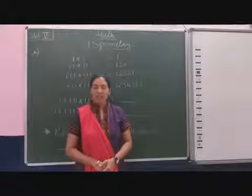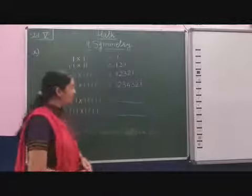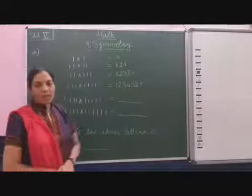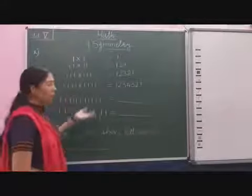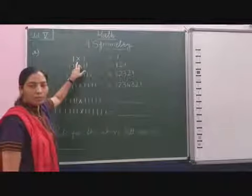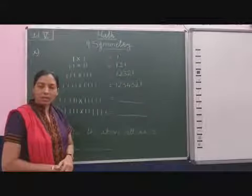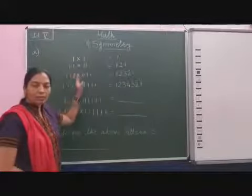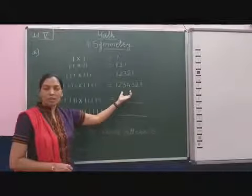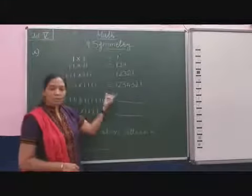Students, here some more interesting patterns are given in your textbook, so let's solve this. You can observe that one number is in the form of a more-digit number. The sign given is multiplication, so first 1 multiplied by 1 is equal to 1. After the equal sign, the numbers given are the answers of this product.